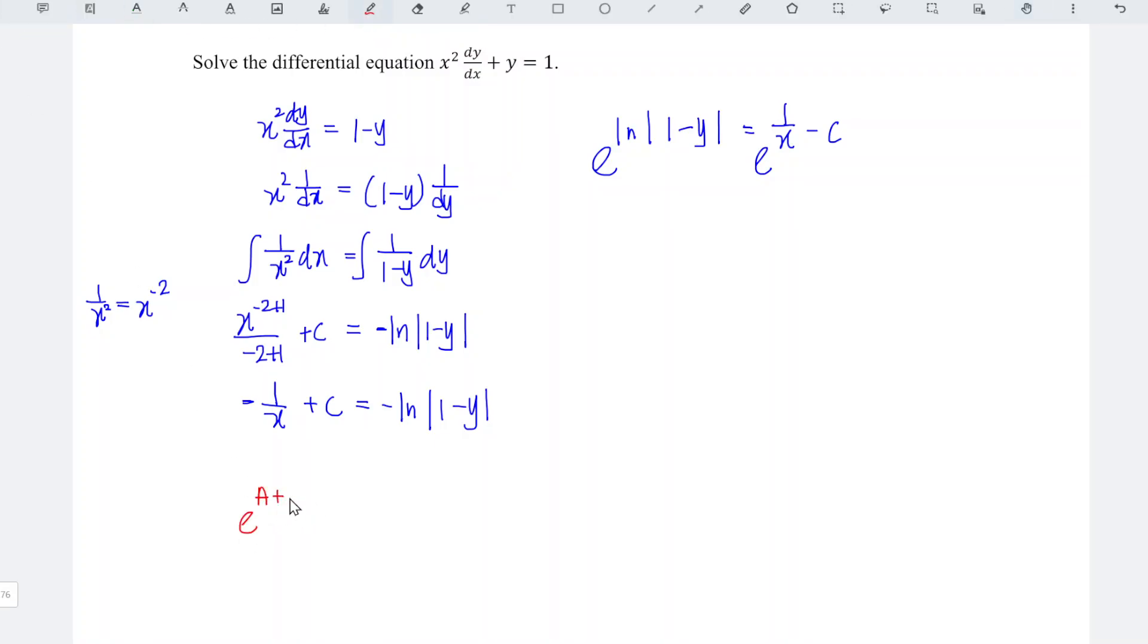e to the power of A plus B equals e to the power of A times e to the power of B. Which means that for this case we should have e to the power of 1 over x times e to the power of negative c, and we can introduce a dummy called c1 here.